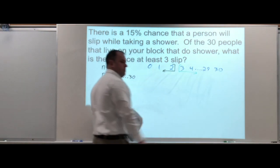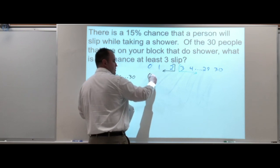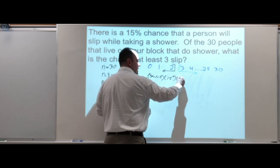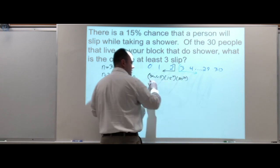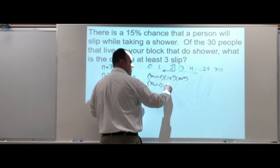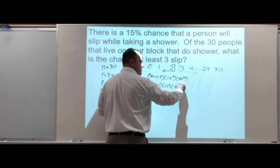If I do this formula here: 30 nCr 0, 0.15^0, 0.85^30; 30 nCr 1, 0.15^1, 0.85^29...